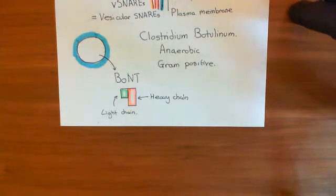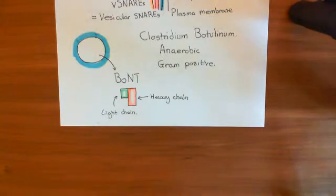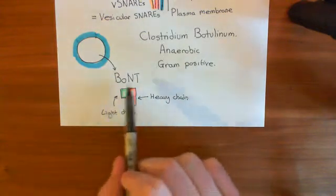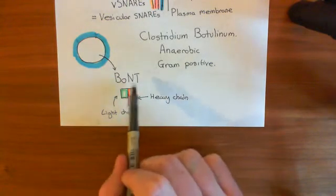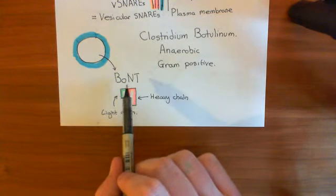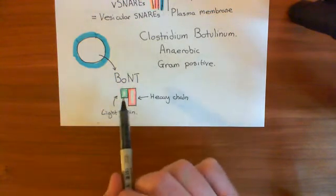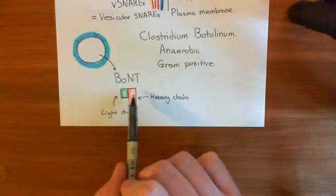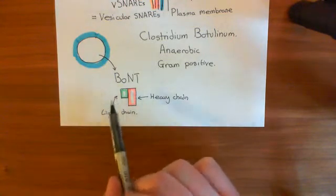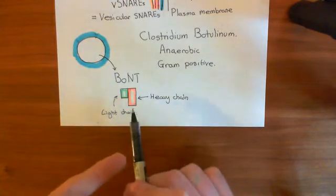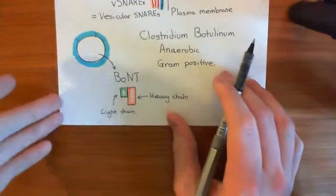Welcome to this next video in which we are discussing the mechanism of action of botulinum neurotoxins. So far we've discussed the structure of botulinum neurotoxins in general, and there are lots of different types of botulinum neurotoxin, which we'll discuss later. But in general, they all have a heavy chain and a light chain, and the heavy chain is the one that's going to bind to the axon terminal of the neurons. Let's draw this happening.